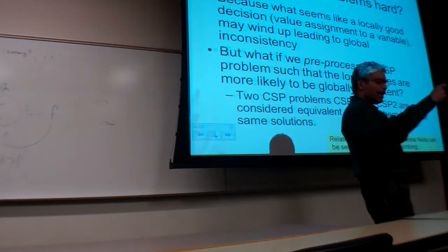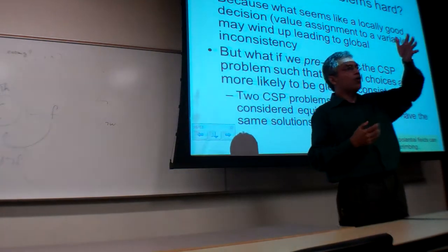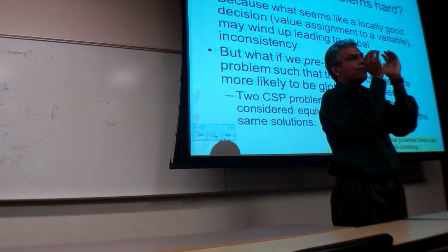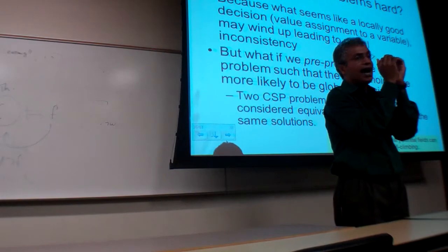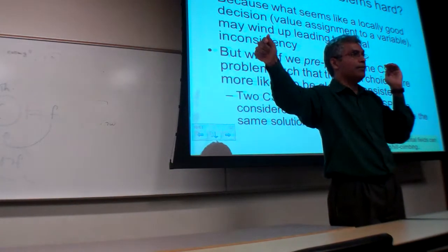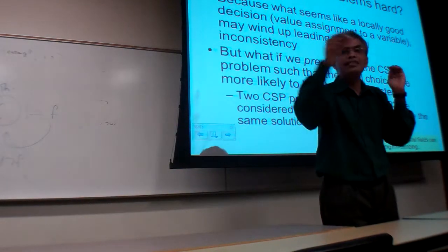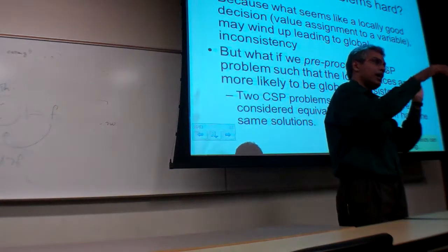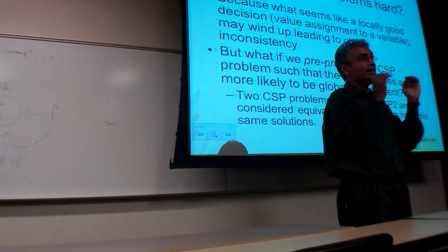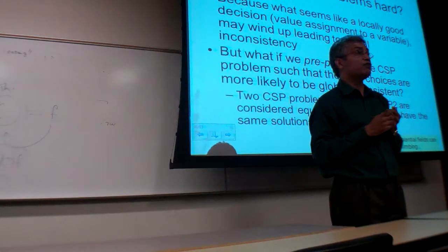A CSP where you'll never have to backtrack when you are given a partial assignment that is correct for k variables and a k plus one-th variable, you can always give a value to the k plus one-th variable without having to undo anything you have done to the k variables. That is considered k plus one-consistent.